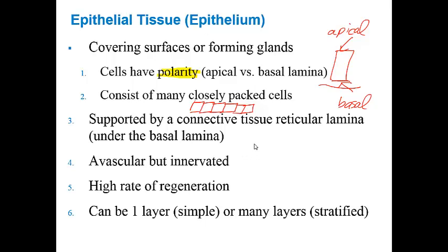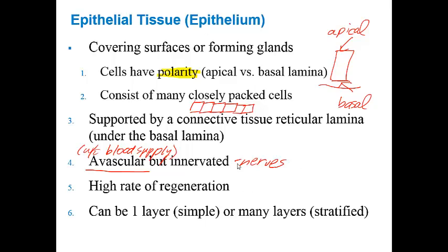Another important characteristic to know is that epithelial tissue is avascular, meaning without a blood supply. However, they are innervated, so there is a nerve supply — we will see some small nerves throughout the epithelium. It has a high rate of regeneration with constant mitosis, so our skin is constantly being replaced about once a month.